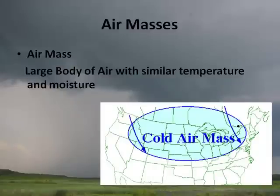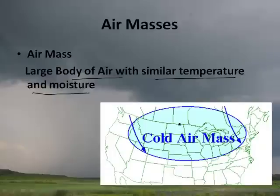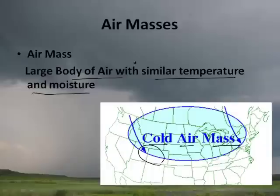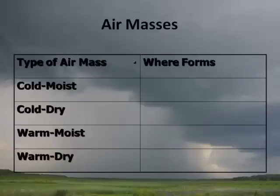Now we need to discuss a couple of important concepts to understand weather. There are different kinds of what we call air masses. An air mass is a large body of air with similar temperature and moisture. For example, in the northern portion of North America — particularly Canada — that is a cold air mass, and it can move into the continental United States, causing weather.